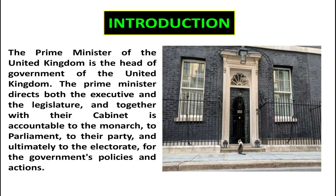Introduction of the topic. The Prime Minister of the UK is the head of the government of the United Kingdom. The Prime Minister directs both the executive and the legislature and together with their cabinet is accountable to the monarch, to parliament, to their party and ultimately to the electorate for the government's policies and actions. The institutional prime ministership is the result of a convention. In 1905, the title Prime Minister was noted in a Royal Warrant and it was later mentioned in the Chequers Estate Act 1917. The position of the Prime Minister was legally recognized after the passage of the Ministers of the Crown Act 1937.